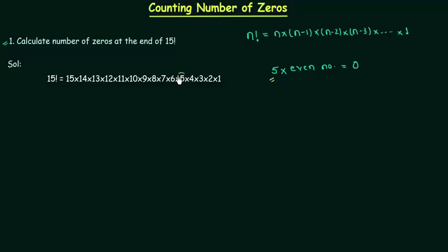I have one 5 here. 10 I can write as 2 multiplied by 5, so another 5 from 10. 15 I can write as 3 multiplied by 5, so we have another 5 from 15. In total we have 3 fives and hence we have 3 zeros at the end of 15 factorial and this is our answer.